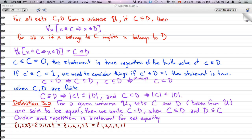And how we read this is, for all X, if X belongs to C, that'll imply that X also belongs to D. So in this case, with this symbolic definition, we know that C is a subset of D.